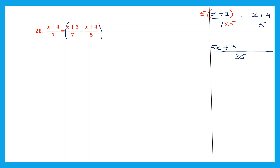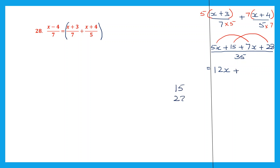Now let's continue. 7 5s are 35, so multiply this whole thing by 5. So 5 into x is 5x and 5 into 3 is 15. Let's move to the other fraction. Here 5 7s are 35, so let's multiply this whole thing by 7. So we have plus 7 into x is 7x, plus 7 4s are 28. Now let's work on 5x and 7x: 5x plus 7x is 12x. Let's take 15 plus 28: 5 plus 8 is 13 carry 1, 1 plus 2 plus 3 is 4. So that is 43 by 35.